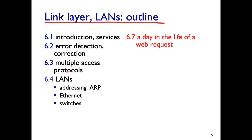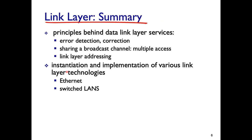Section 6.7 is left for self-study — it shows how a packet travels from the browser through HTTP, TCP, DNS, IP, and the link layer, illustrating the whole network protocol stack in use. To summarize the link layer: we've covered error detection and correction, multiple access for shared channels, MAC addressing used alongside IP addressing, Ethernet, and switched local area networks, which are currently widely deployed.